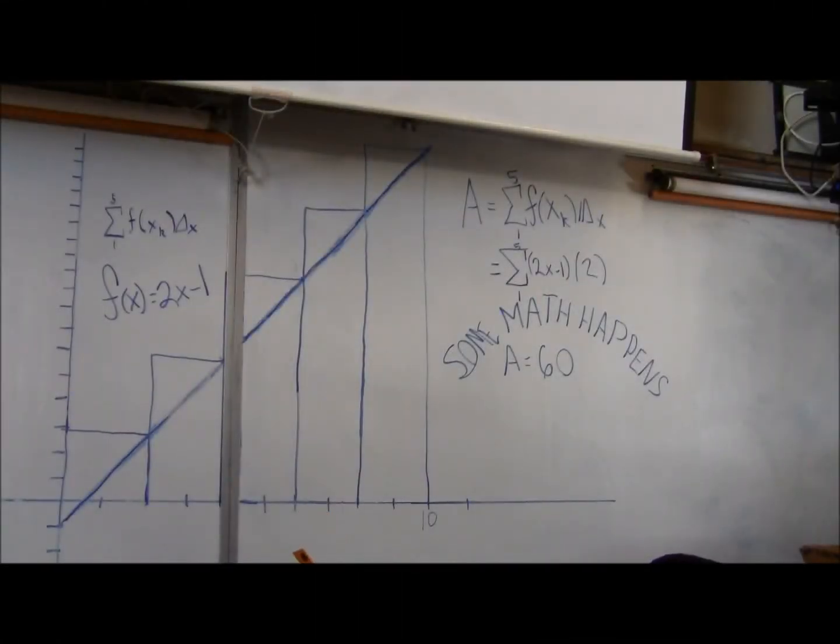Hello, class. I am Dr. Neuberger. As you can see today, we will be doing the right Riemann sum of this graph, which is 2x minus 1, in five separate subintervals.